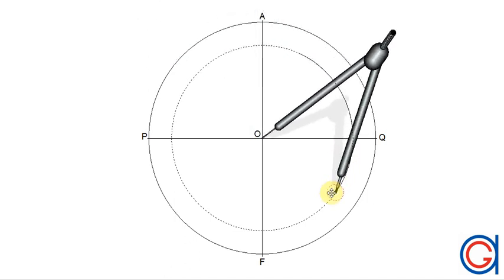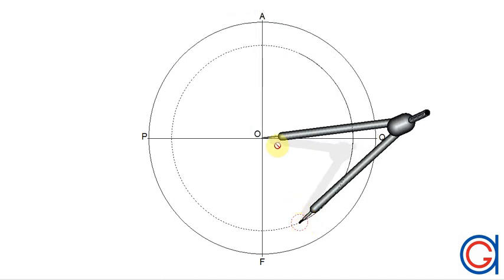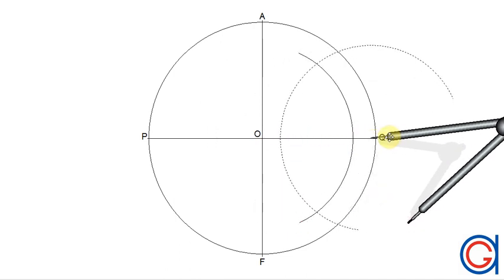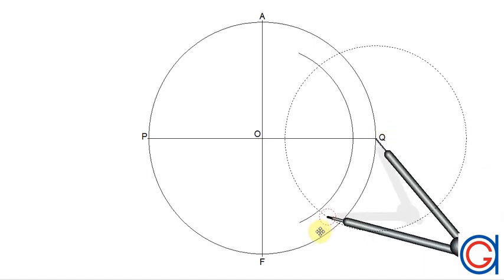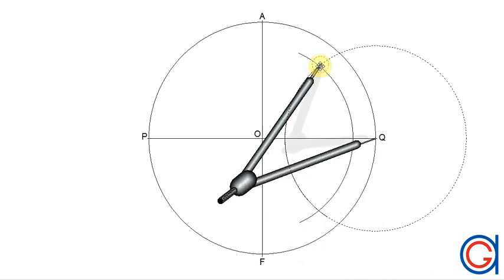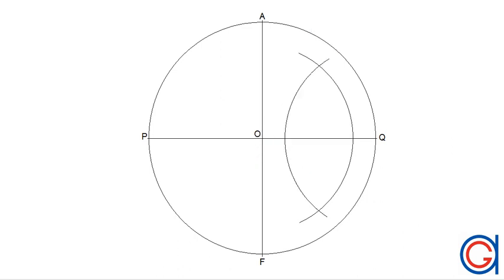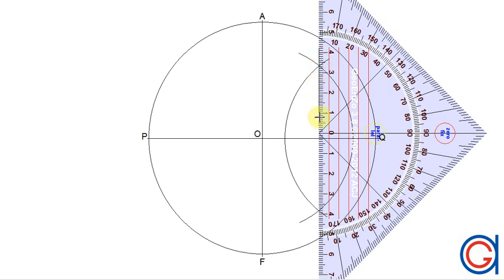To do this, with our compass set on point O and a radius slightly greater than half of the radius OQ, we scribe an arc above and below the radius. Now with the same radius and the compass centered on point Q, we scribe another arc which intersects our previously drawn arcs at two points. We will join these two points, and where it cuts the radius OQ, this will be the midpoint R of the radius.